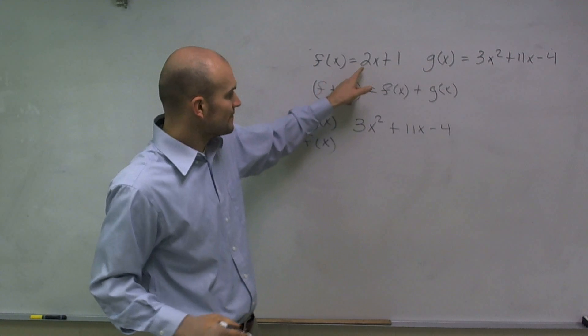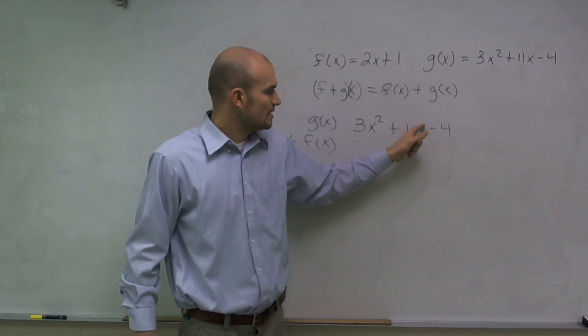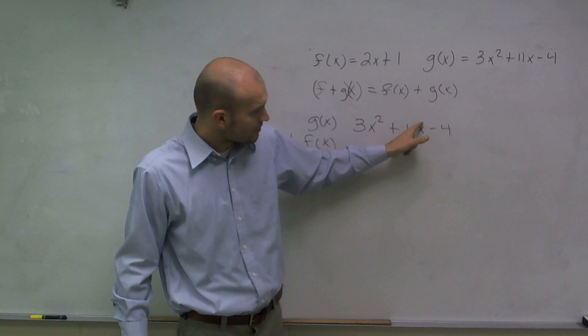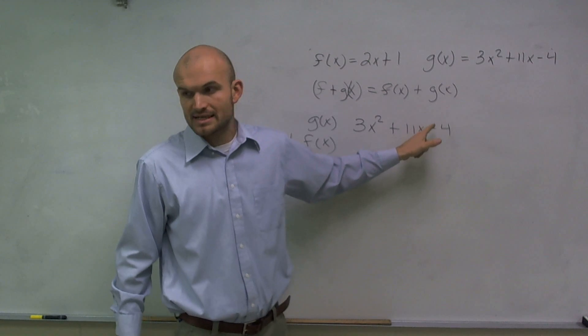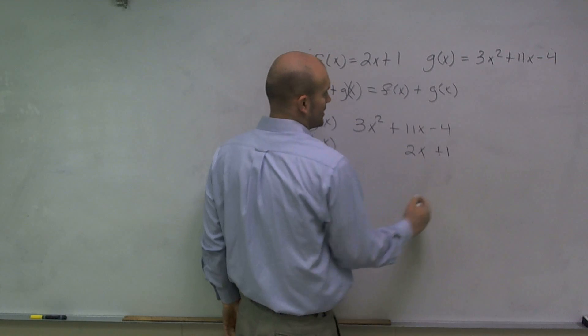Now, f of x is 2x plus 1. I can only add 2x to its like term, where it has a variable to the same exponent, which is 1. So I can only put 2x right here and 1 right here.